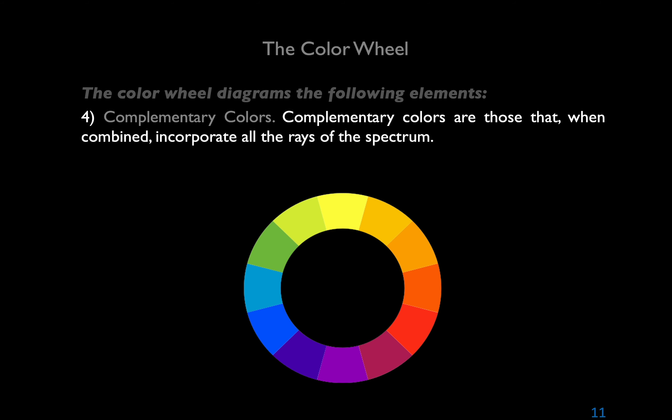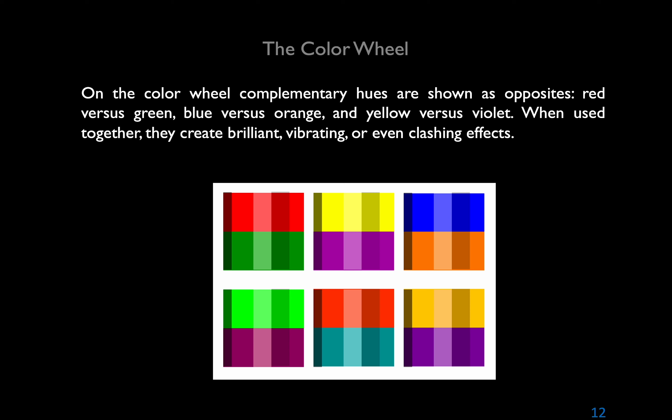There are also complementary colors on the color wheel. Complementary colors, when combined, incorporate all the rays of the spectrum — the dictionary defines complement as either of two things needed to complete each other. On the color wheel, complementary hues are shown as opposites: red versus green, blue versus orange, and yellow versus violet. When used together, they create brilliant, vibrating, or even clashing effects. They are also opposite psychologically and in their references to nature: fire and ice (orange and blue), sun and shadow (yellow and violet), flower and foliage (red and green). Unlike analogous hues, these are colors of extreme contrast.